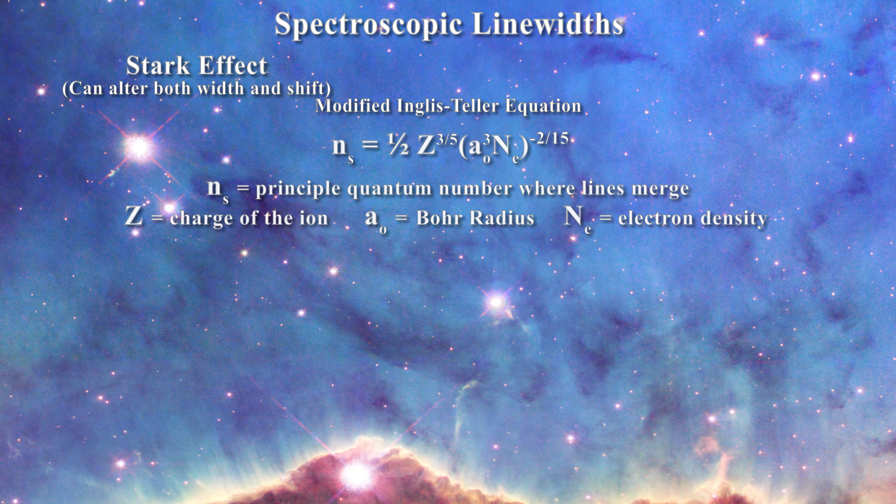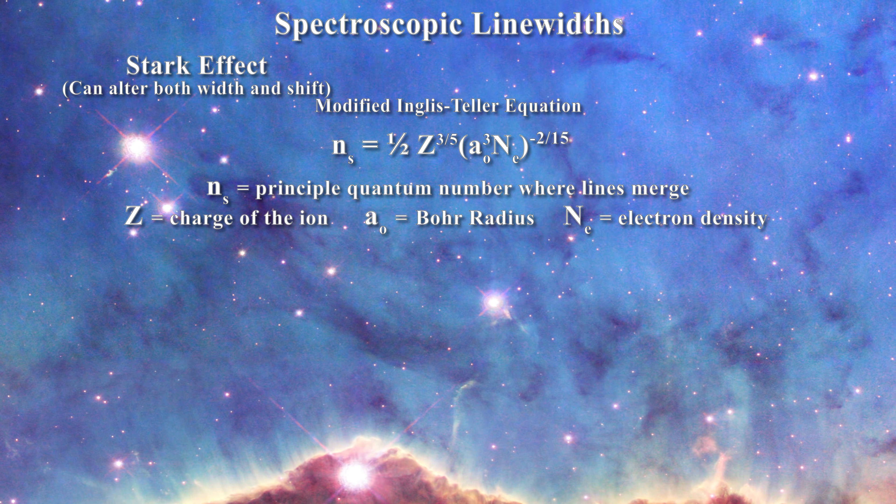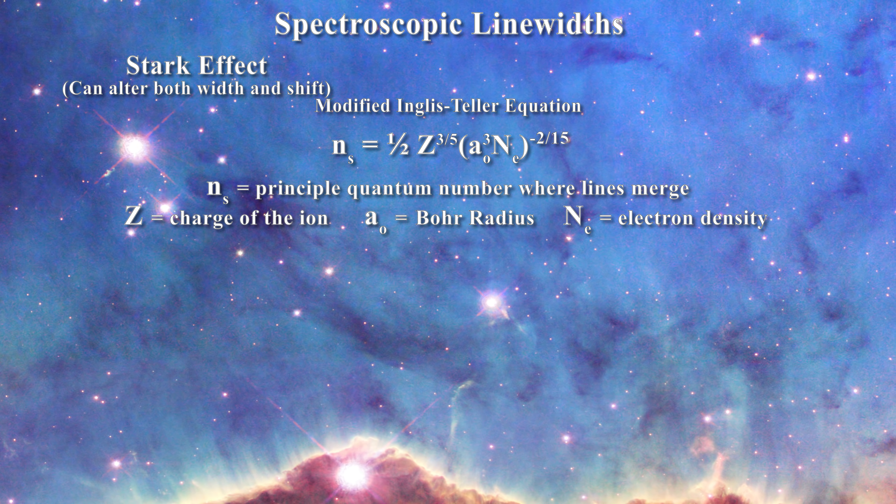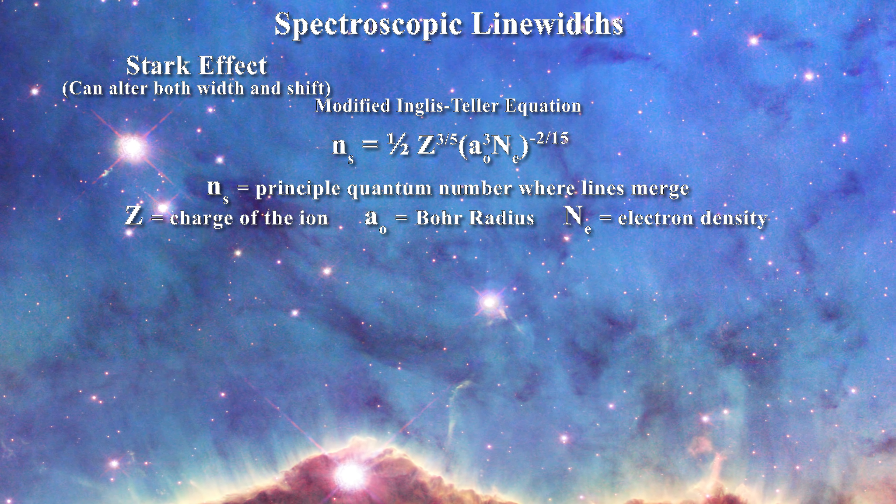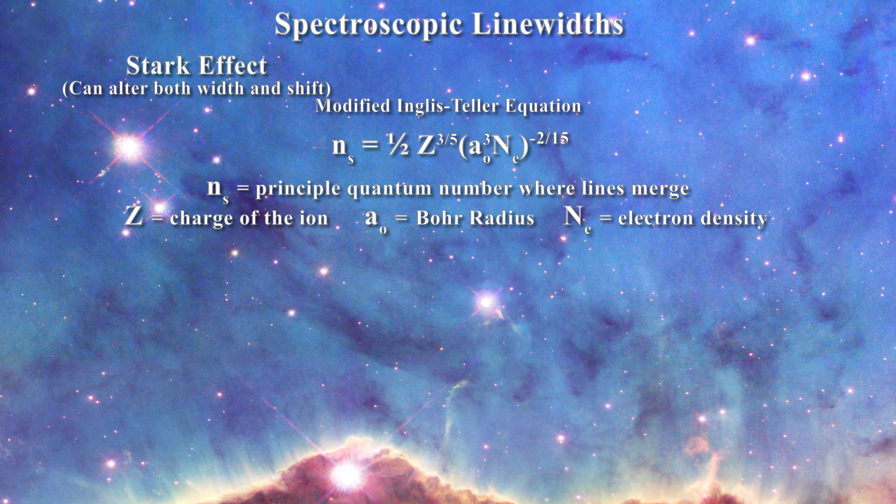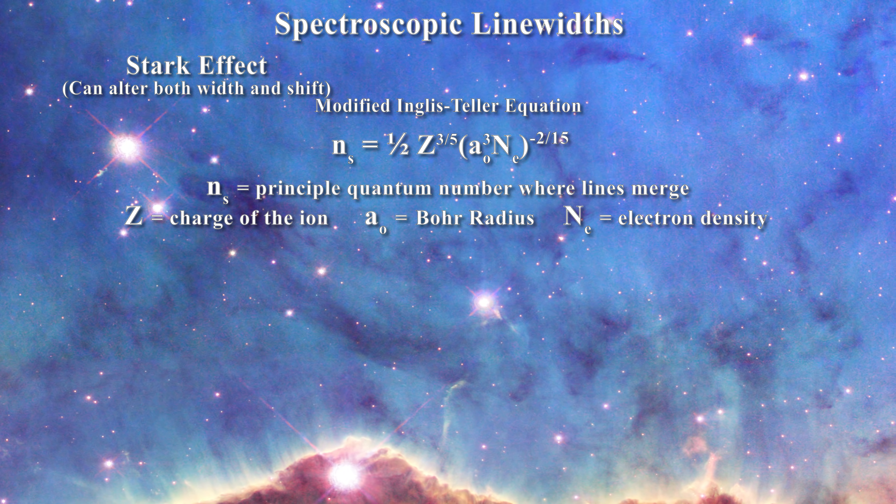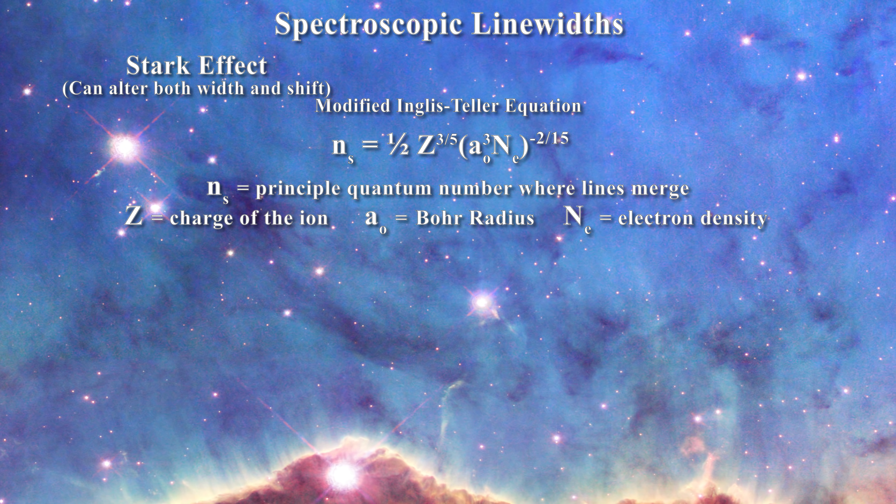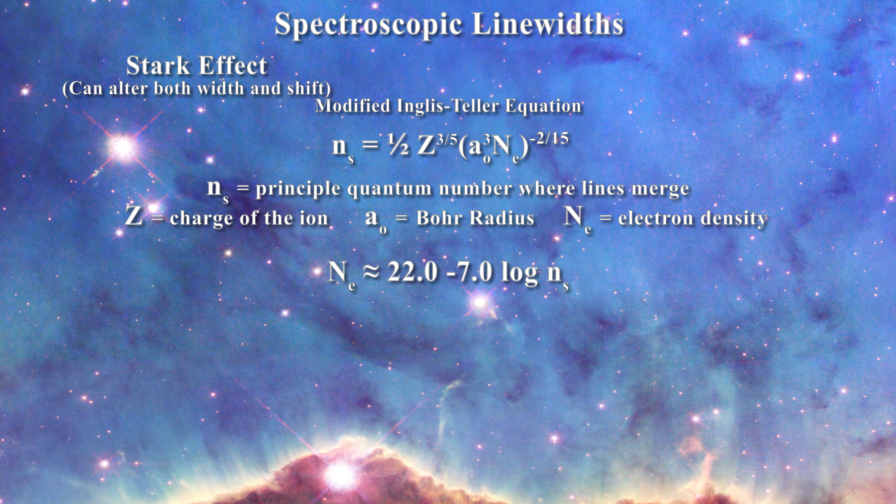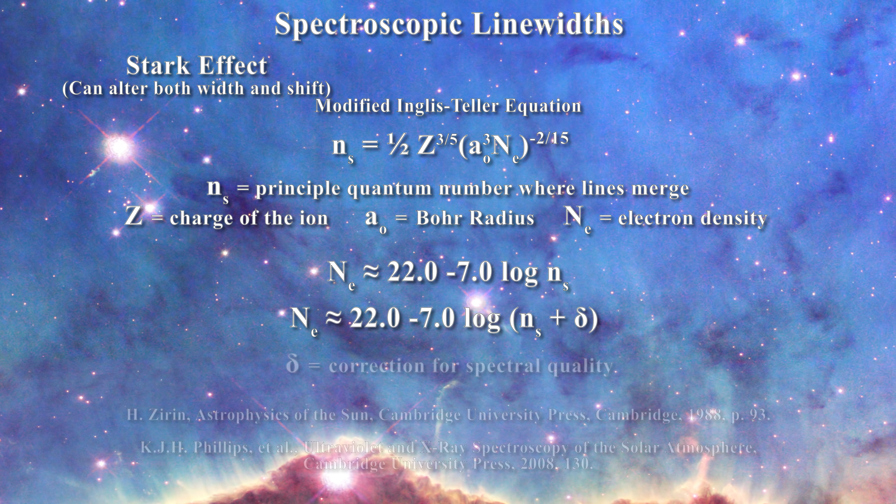using the Inglis-Teller formula, where n sub s is the principal quantum number where the merger of the line occurs, z is the charge of the ion, a0 is the Bohr radius, and n sub e is the electron density. The expression is sometimes seen in simplified form as follows, and sometimes with a correction factor for spectral quality, but all provide essentially the same result.